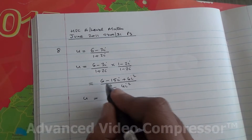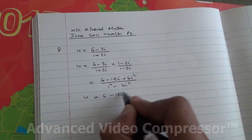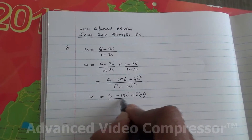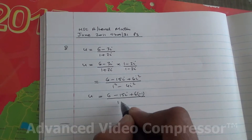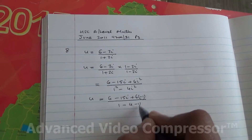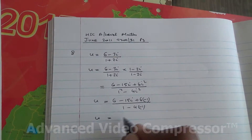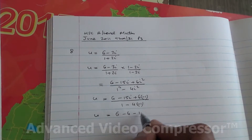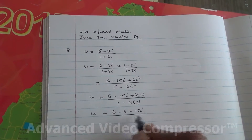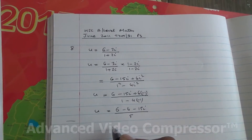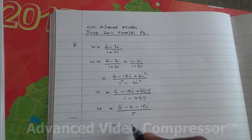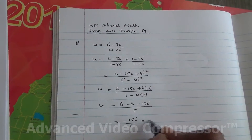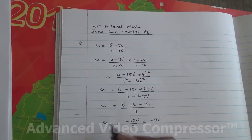So u is going to be 6 minus 15i plus 6 times minus 1, because i squared is minus 1. We have 1 minus 4 times minus 1 in the denominator. So u equals (6 - 6 - 15i) / (1 + 4) = (0 - 15i) / 5. That gives us minus 3i. So u = -3i.